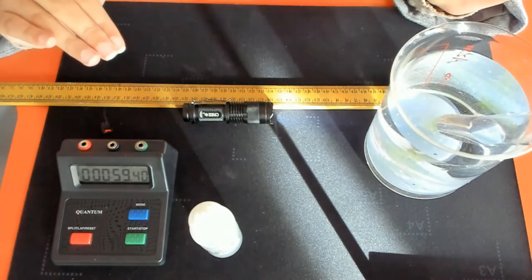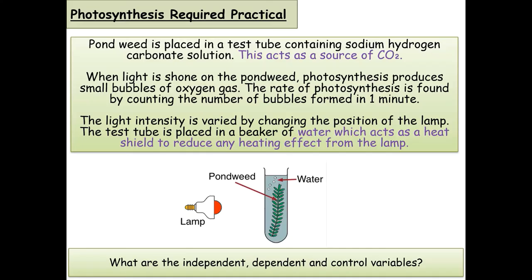So before we actually go into trying to interpret data from a photosynthesis required practical, I thought I would just leave up the steps that we took and why we took them on this screen, just so that you have a reference point. What I want you to do now is have a go at answering the question at the bottom of the screen. What are the independent, dependent and control variables? Pause the video here and have a go and then we'll go through the answers.